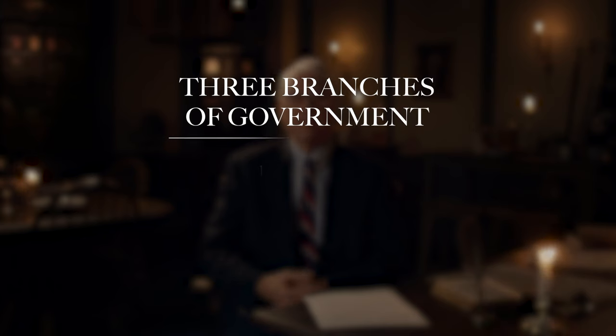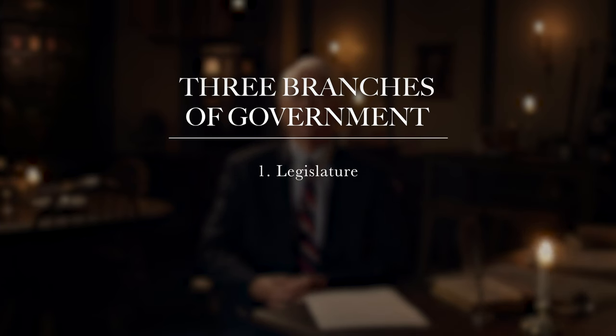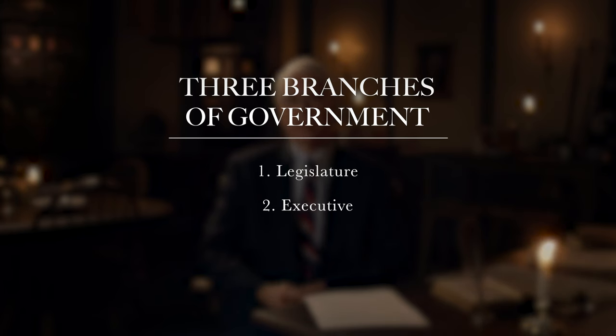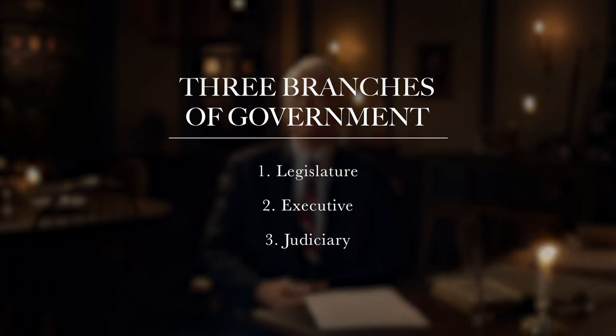If you ask people today — sometimes I'll ask my students — how does the government secure our rights? They'll often say, 'Well, that's what the Supreme Court is for.' The founders would say no — government protects your rights not just through the judiciary, but through all three branches of government. You have to have a legislature to make laws, an executive to carry out arrests, prosecutions, and punishments, and a judiciary to decide whether the accused is truly guilty or not guilty. You need all three branches — that's what makes government protection possible through criminal law.